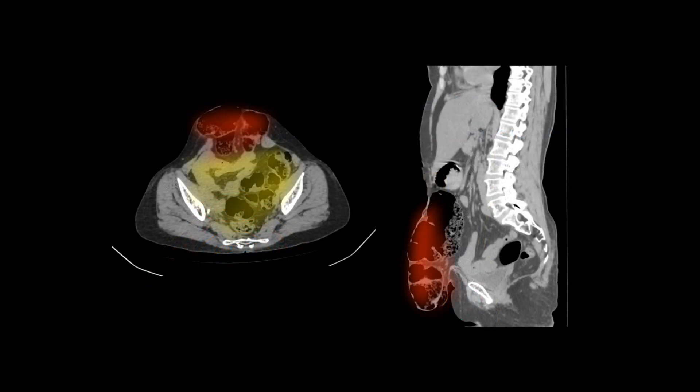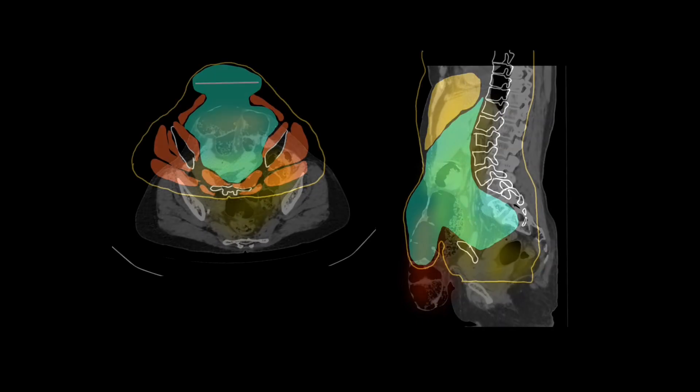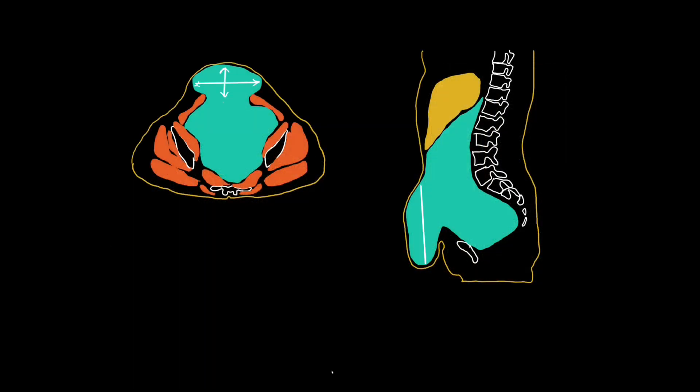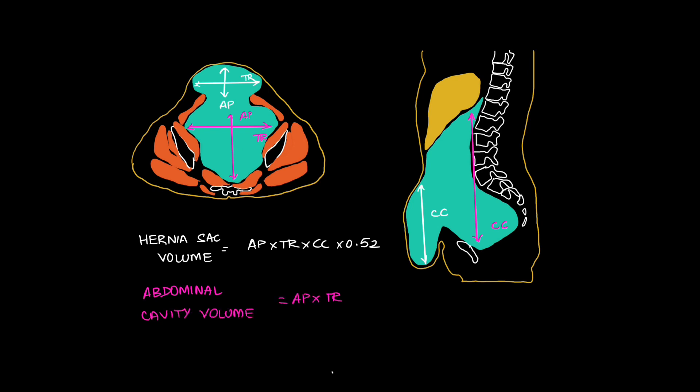These are the sections on the actual CT: hernia sac volume and abdominal cavity volumes. The formula to calculate volume of an ellipse is you have to measure antero-posterior, transverse, and cranio-caudal distance of each ellipse, that is the hernia sac and later the abdominal cavity. AP times TR times CC times 0.52 gives the volume of each cavity.